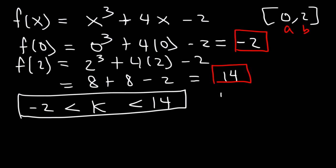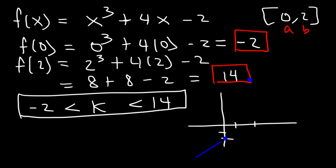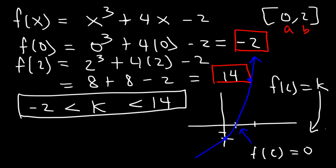So if you think about it, if we have some function where f of zero is negative two and f of two is 14 — so that's probably way up here — and if it's continuous, at some point the curve has to cross the x-axis. So there's some value where f of c is equal to zero. And keep in mind, f of c is k, so there's some value where k is equal to zero. So there's going to be a root or a zero in the equation.